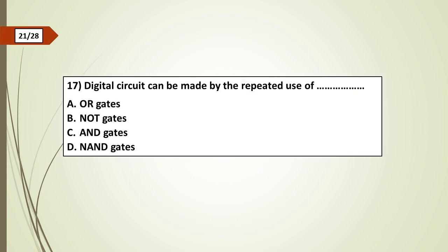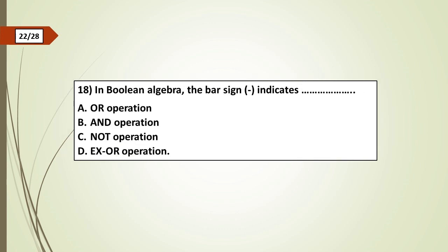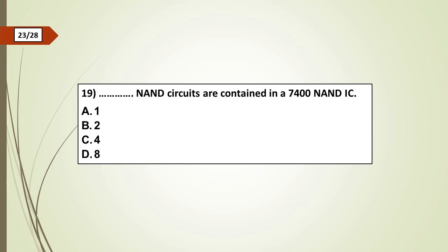Seventeenth question: Digital circuit can be made by the repeated use of dash: a) OR gates, b) NOT gates, c) AND gates, d) NAND gates. Eighteenth question: In Boolean algebra, the bar sign indicates dash: a) OR operation, b) AND operation, c) NOT operation, d) XOR operation.